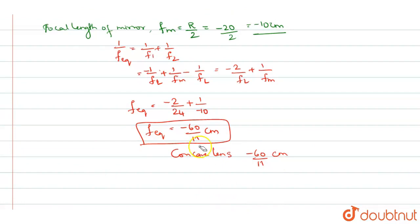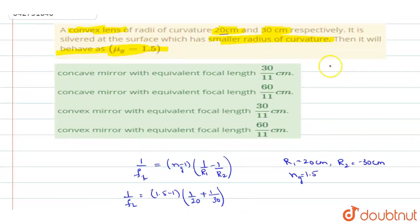So you concave, oh sorry, concave mirror, right? We are finding out for a mirror. So sorry, this will be a mirror because when it is one side is silvered. So when one side is silvered, it will always behave like a mirror. So the combination behaves like a concave mirror of minus 60 by 11. So concave mirror with minus 60 by 11 centimeter. So option 2 will be the right answer.